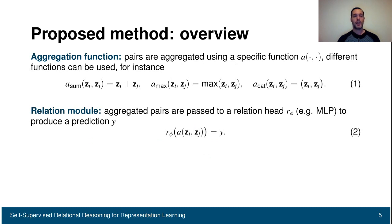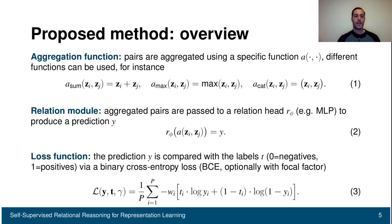After obtaining the pairs, we apply an aggregation function — given by applying a function A on top of the pair — which can be sum, max, or concatenation. A relation head, which is a multi-layer perceptron, then generates a prediction. The loss function takes as input the prediction y and a label t: t is zero for negative pairs and one for positive pairs. We impose a binary cross-entropy loss, which optionally can have a focal factor, or we can use regression losses like mean squared error. By minimizing this loss, we learn useful representations in the backbone.